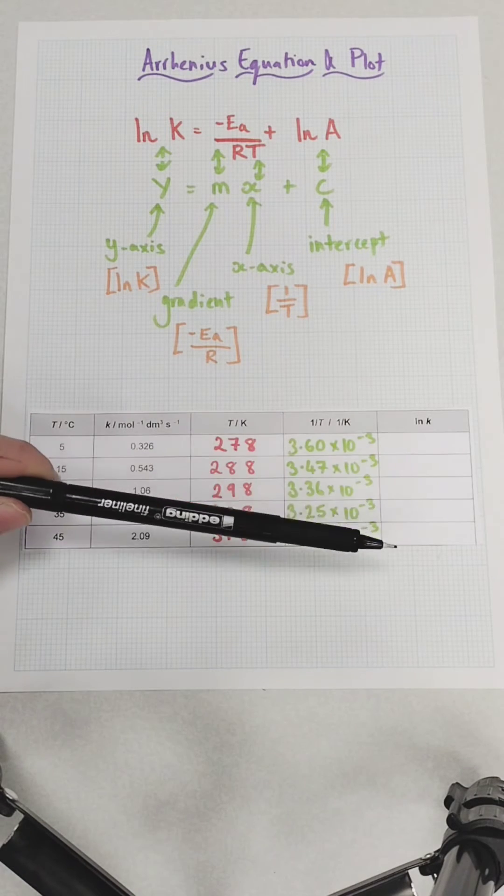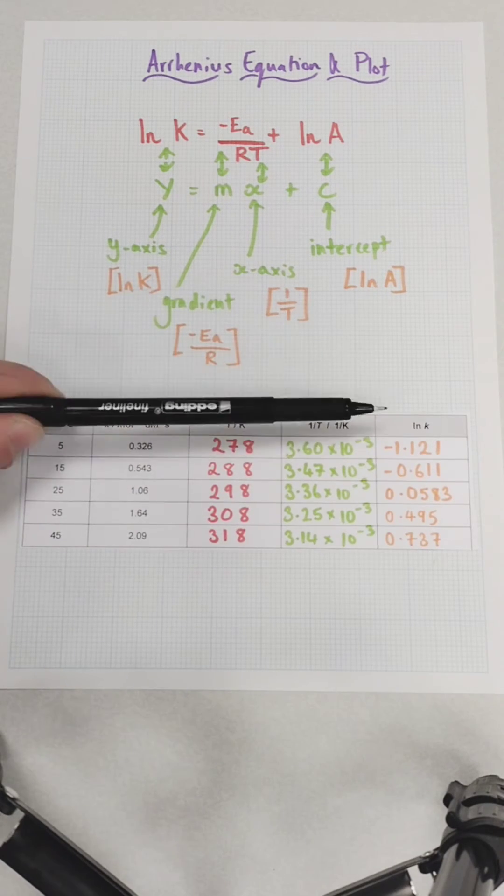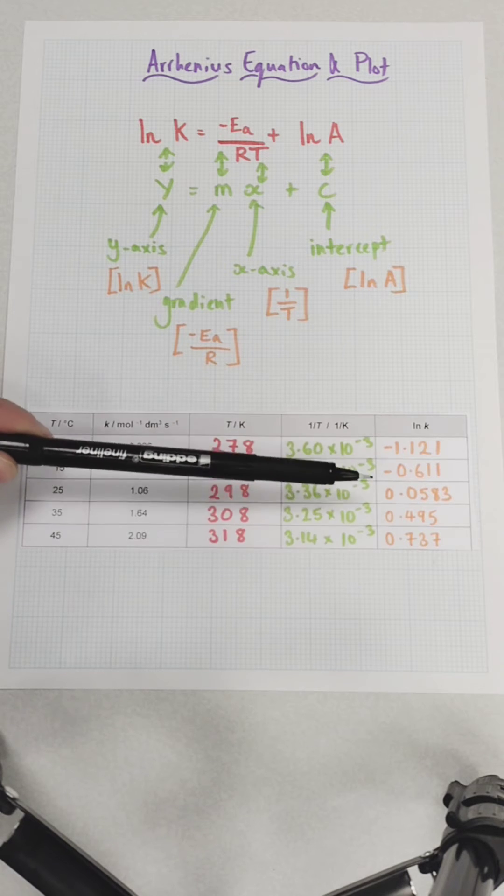Now you can use the natural log function in your calculator to find the natural log of the k values in your table, and you'll plot these values on the y-axis.